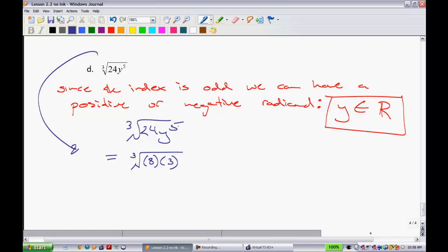Now, y to the 5. We need to think of some y that when you raise it to the power of 1 third, it'll simplify. So it's going to be something that's a multiple of 3. So we have y cubed, and then times y squared. When you simplify this, the 8 pops outside. The cube root of 8 is 2. And when you take the cube root of y cubed, you just get a y. So we have 2y times the cube root of what's left over. We have 3y squared. So that concludes this lesson.